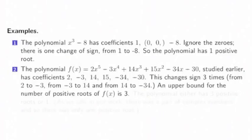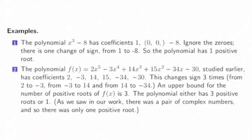So an upper bound for the number of positive roots of f(x) is 3. It changes sign three times. So this polynomial either has three positive roots or it's possible there are two complex ones that come in conjugate pairs, so maybe there's just one positive root. As we saw in our earlier work, there were a pair of complex conjugates and then one positive root.